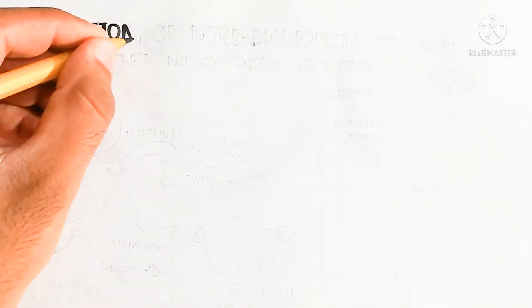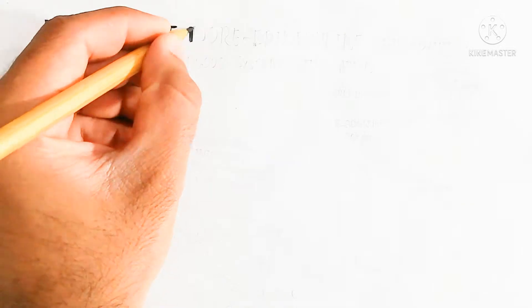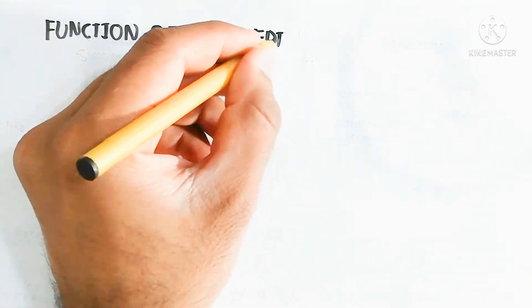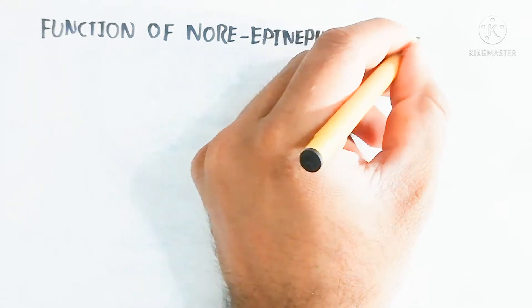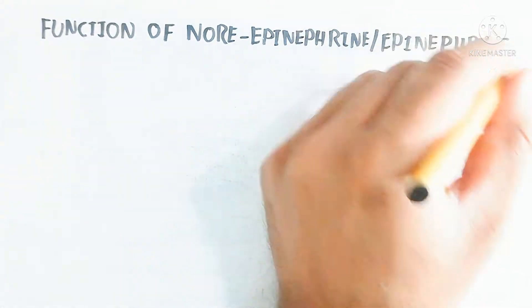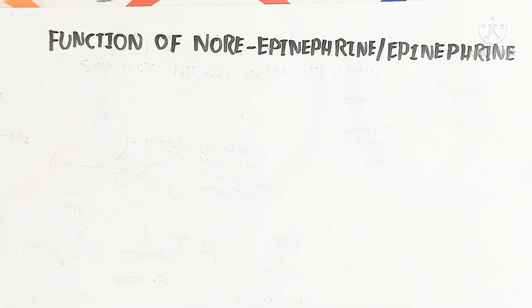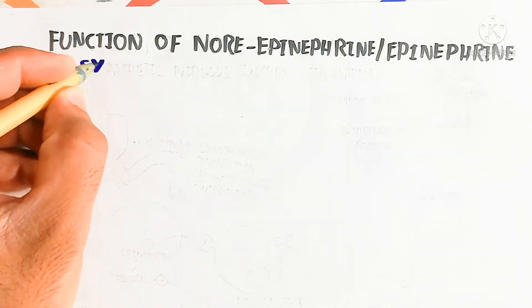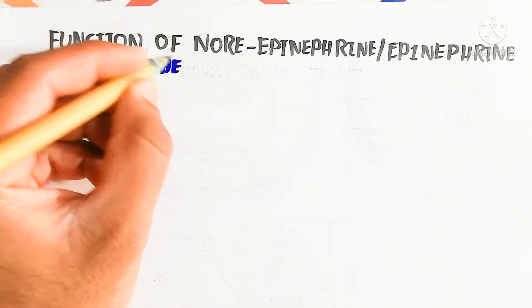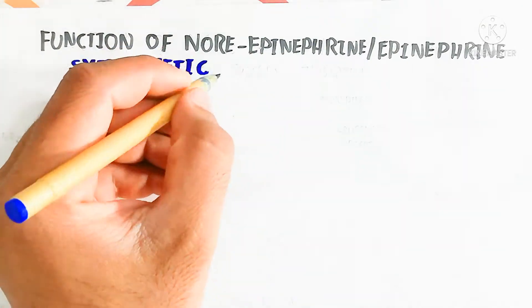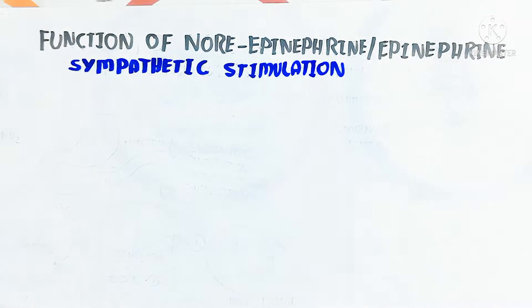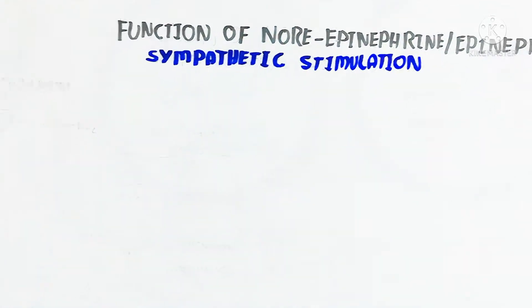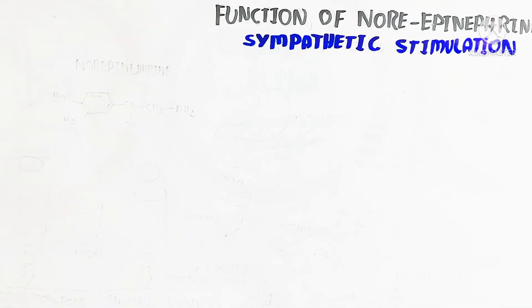Hello. In this video we will discuss the function of norepinephrine and epinephrine, which are part of the sympathetic stimulation — the sympathetic nervous system. The fight-or-flight response produces norepinephrine and epinephrine through our nervous system as well as through the adrenal gland. Let's begin to understand norepinephrine first.